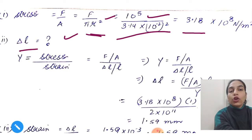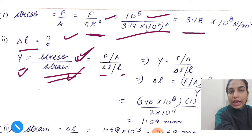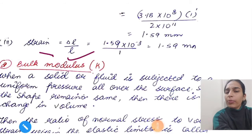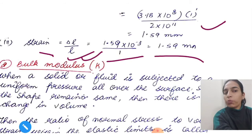Next you need to find elongation, meaning delta L. We know Young's modulus is stress upon strain. Young's modulus is given, stress we just calculated, strain is delta L upon L. All values are given, we just need to find delta L. When you solve, delta L comes out to be 1.59 millimeters. Strain is calculated as delta L upon L. Delta L we just found, L is given, so when you substitute, it's 1.59 millimeter. I've shown you how to do it.